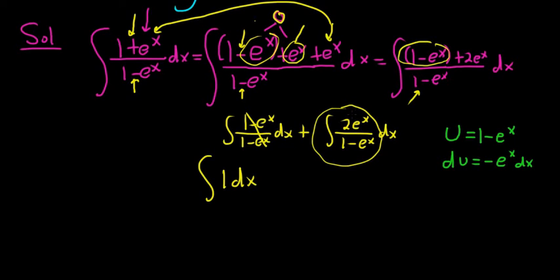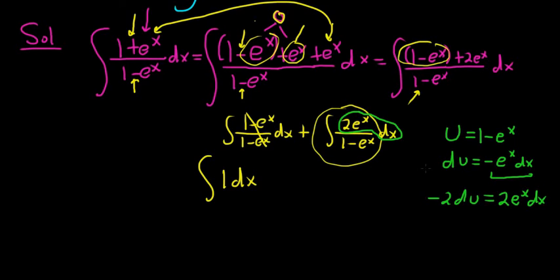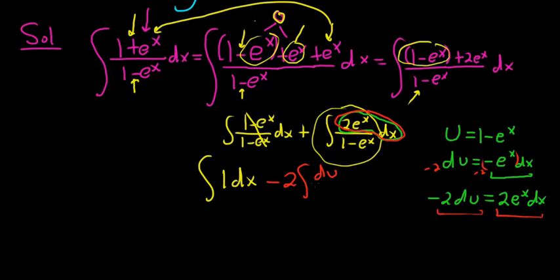Now we have 2eˣ dx here, and du = −eˣ dx. So if we multiply both sides by −2, it becomes −2 du = 2eˣ dx. Putting a −2 on both sides — negative times negative is positive — we get that red piece. So 2eˣ dx becomes −2 du, and what's left in the denominator is u.